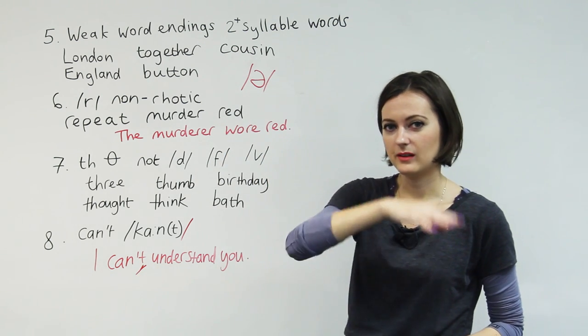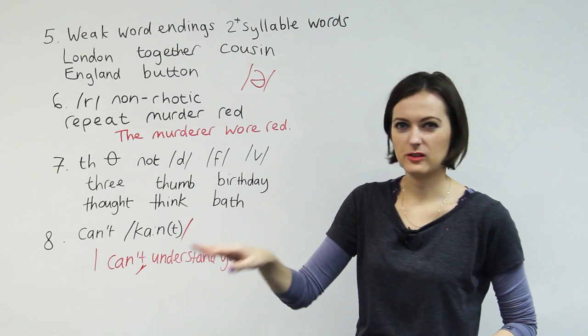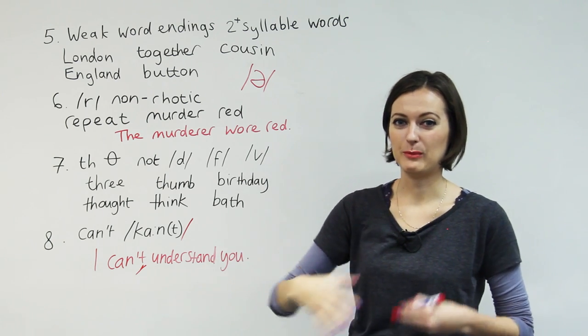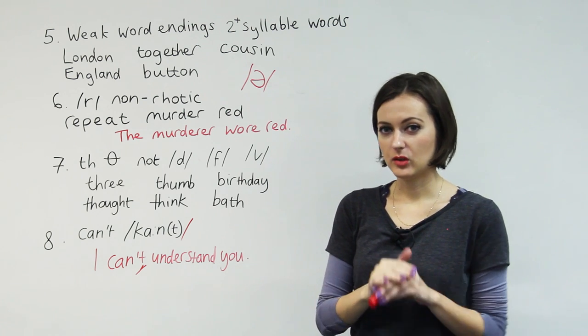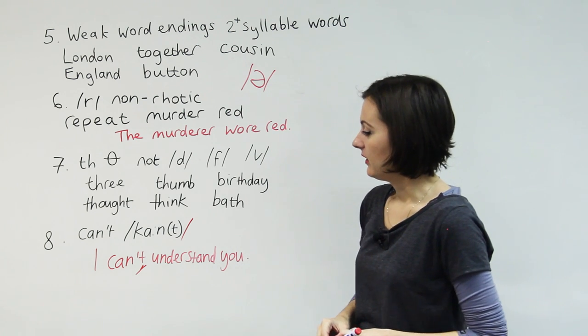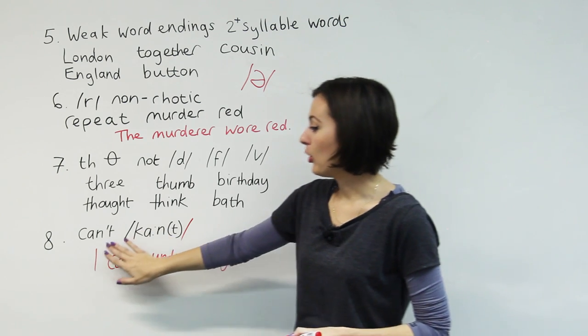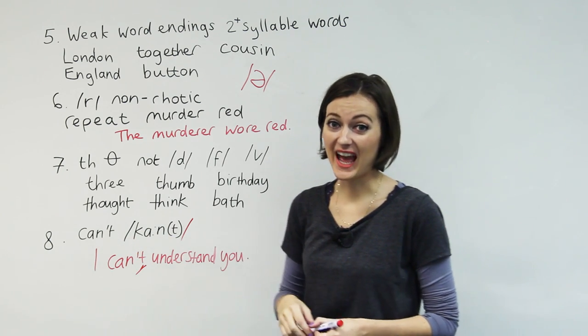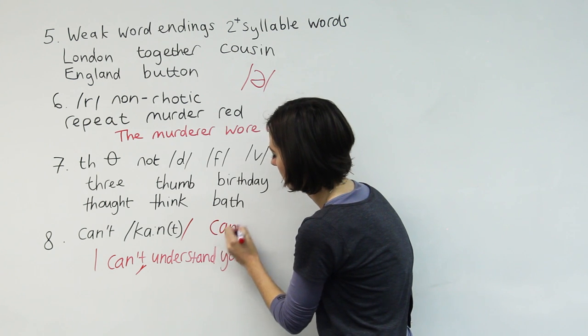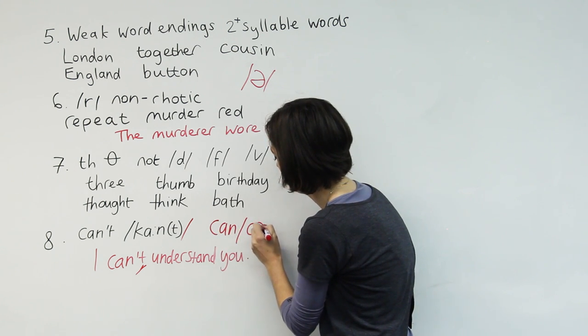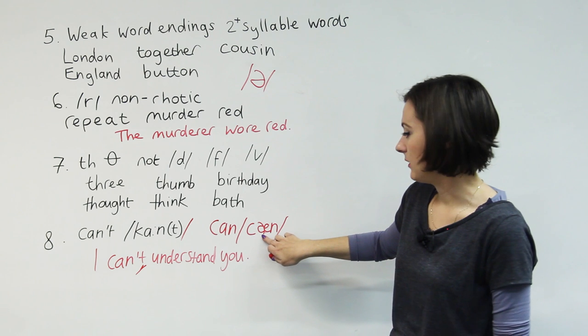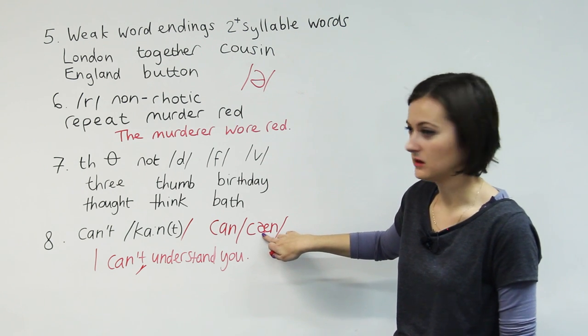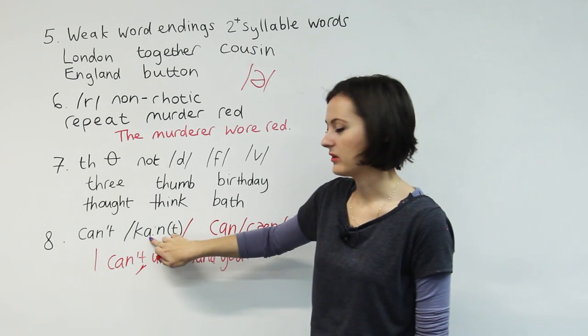And the reason that happens is speech just becomes a little bit more fluid, a little bit more easy to say without the T. But you don't need to be confused because, actually, the opposite of can't is can. And can... can is a different vowel. It's /æ/.